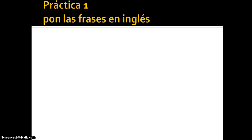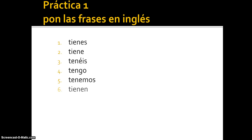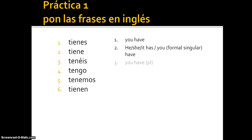Practice: translate these into English. Number one: tienes — you have, singular. Number two: tiene — he, she, it has, or you formal have, singular. Number three: tenéis — you have, plural. Number four: tengo — I have. Number five: tenemos — we have. Number six: tienen — they have, or you have, plural formal.